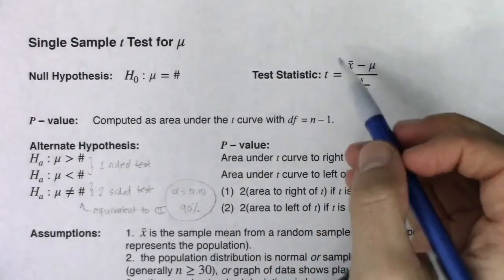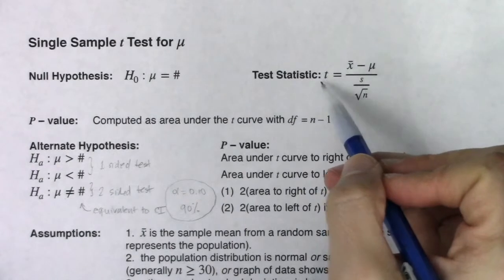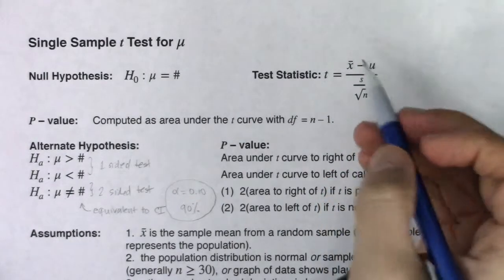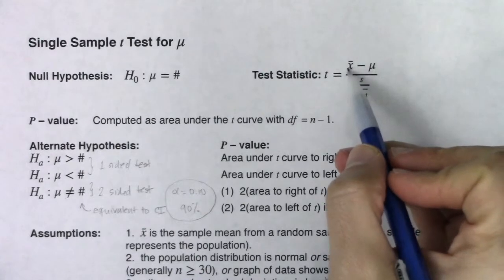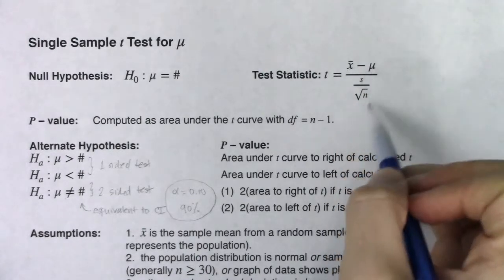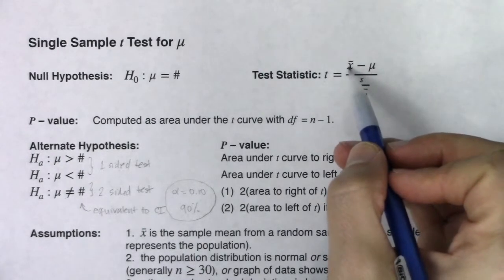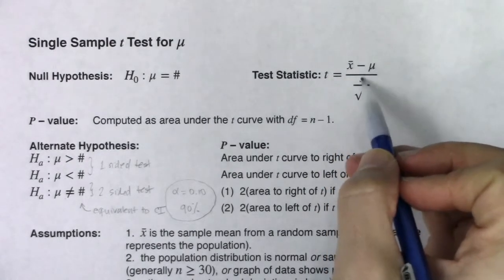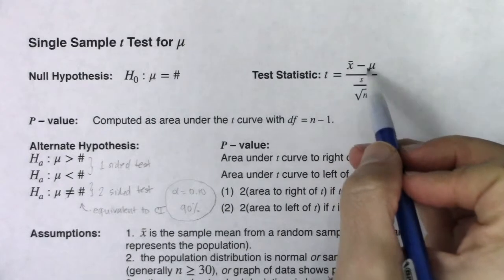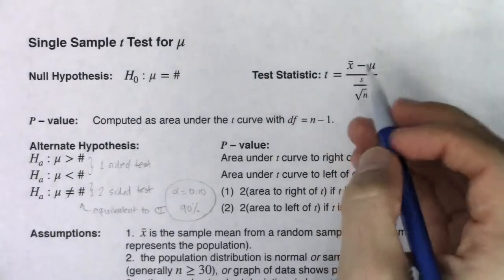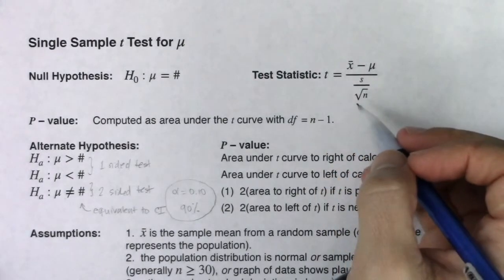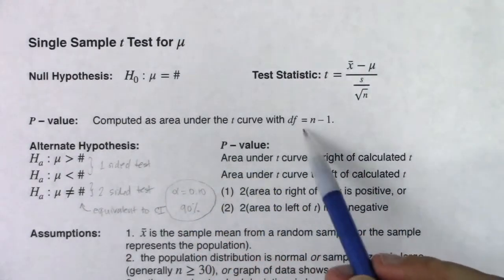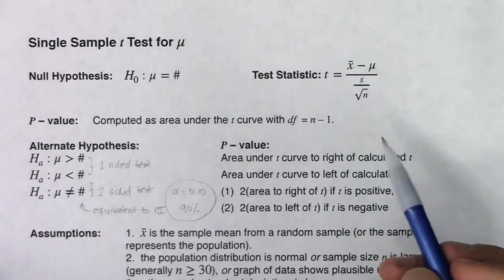Our test statistic — we're going to leave z-scores behind and go back to the t-distribution, just like we were in chapter eight for means. You've got your sample mean minus your population mean over your standard error — stat minus parameter over standard deviation — and we're on the sampling distribution for means. The p-value will be area under the curve, and we go back to degrees of freedom being n minus 1.